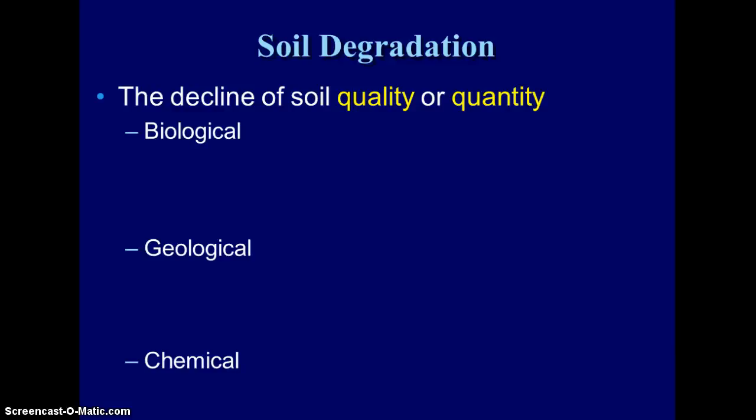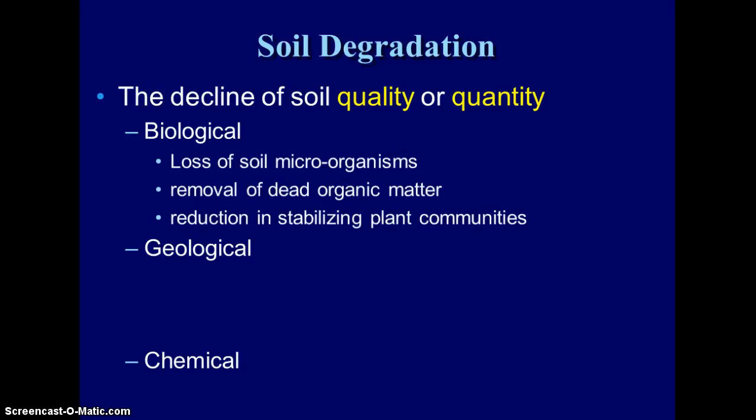Soil degradation is a decline of soil quality or quantity. So either we're losing soil, or we're degrading it to a point that it's not doing us any good for growing crops. There are three categories we can use for degradation: biological, geological, and chemical.